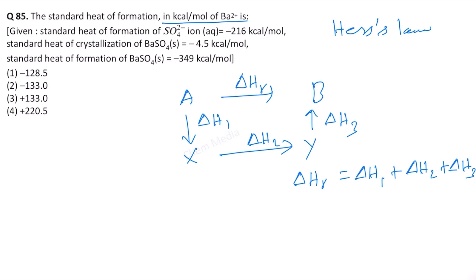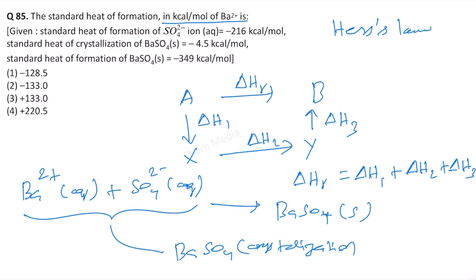So in this case, barium 2 plus in the aqueous medium combining with SO4 2 minus in the aqueous medium gives barium sulfate solid. But there is an intermediate step here, which is crystallization. So first barium sulfate crystallization is what is happening before it is becoming solid. So this means that we need to involve the intermediate step here.